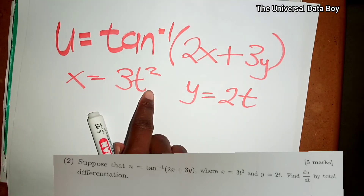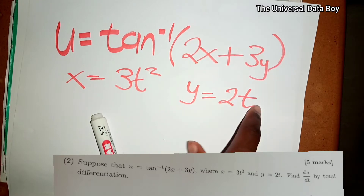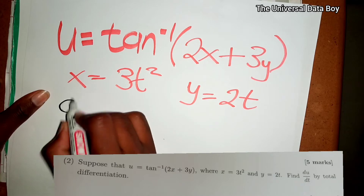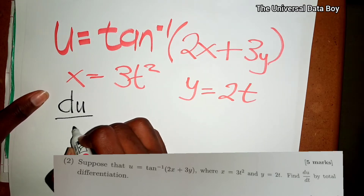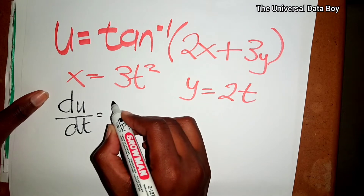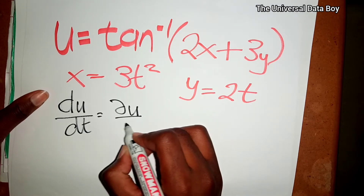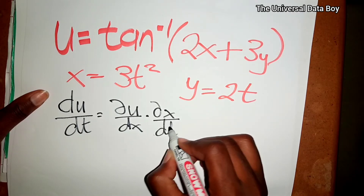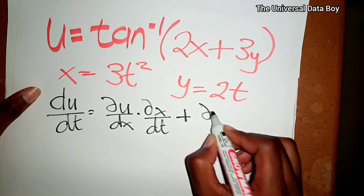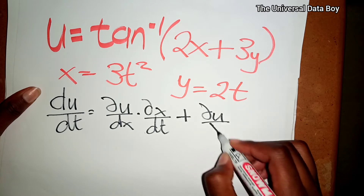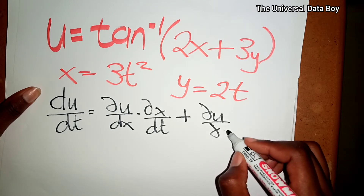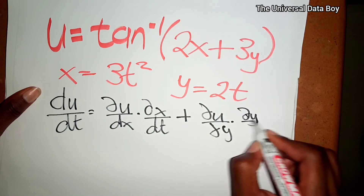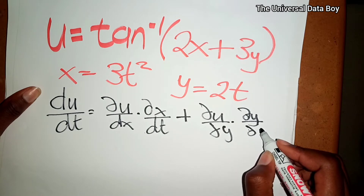x is a function of t, and y is also a function of t. To find the total derivative du/dt, it will be given by the partial derivative of u with respect to x, multiplied by the partial derivative of x with respect to t, then adding the partial derivative of u with respect to y, multiplied by the partial derivative of y with respect to t.